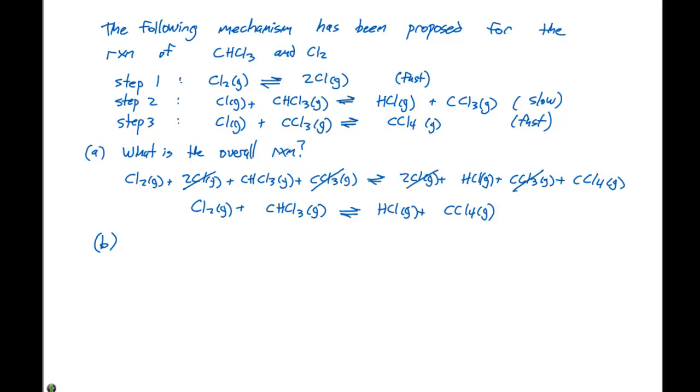Part B of this problem is going to ask us which species are intermediates. Remember our intermediates show up in the elementary steps but not in the overall reaction. So they are the species that we crossed out in the reaction I listed for part A. So Cl gas and CCl3 gas are going to be our intermediates.